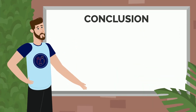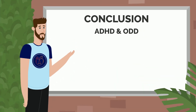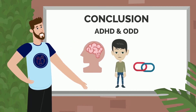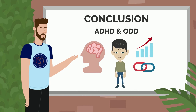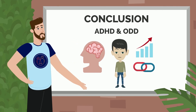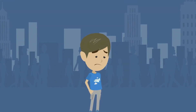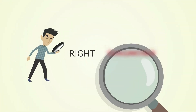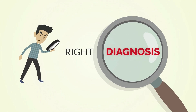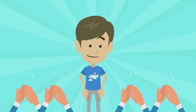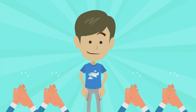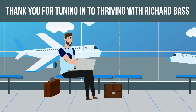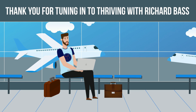To sum up, ADHD and ODD are two neurodevelopmental disorders that are often linked. Children with ADHD are at a higher risk of developing ODD, which can make things even more challenging for them and their families. However, with the right diagnosis, treatment, and practical tips, children with ADHD and ODD can thrive. Thank you for tuning into Thriving with Richard Bass. I hope this video was informative and helpful.